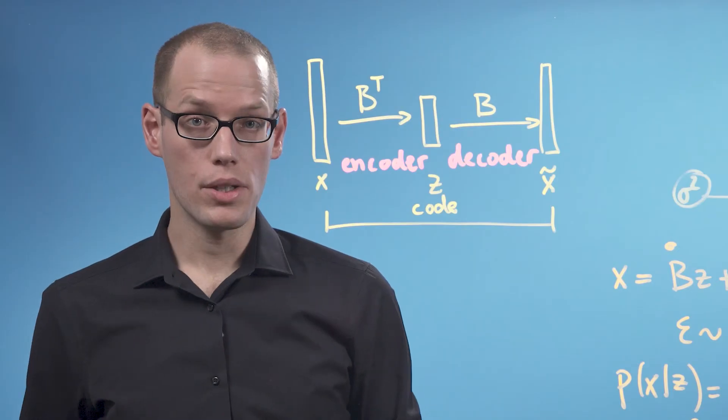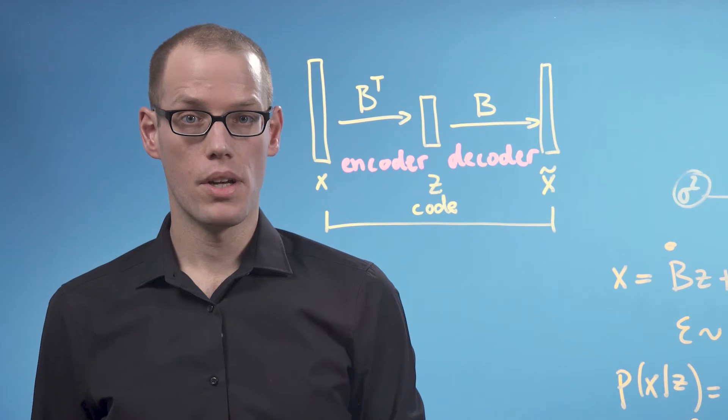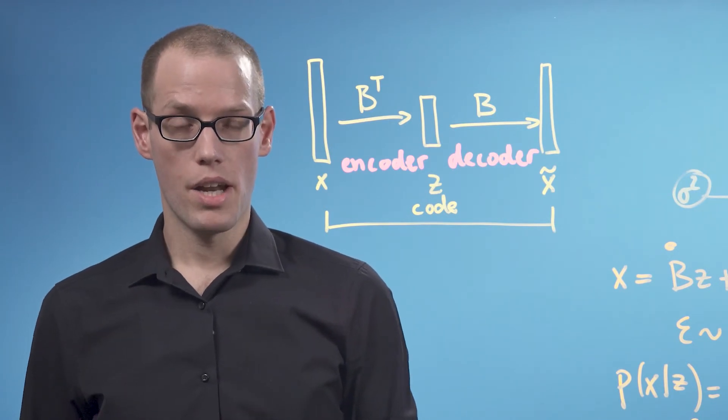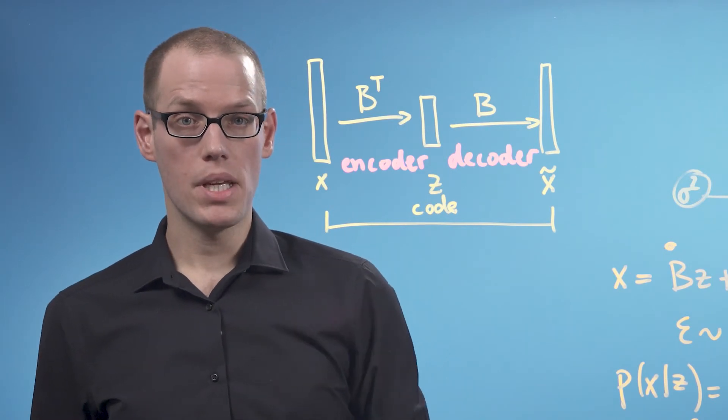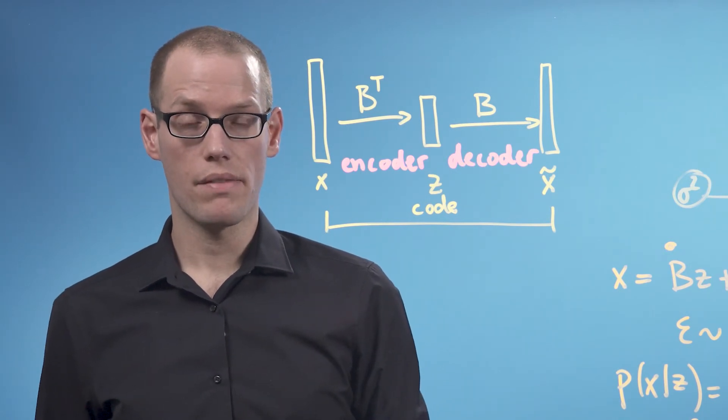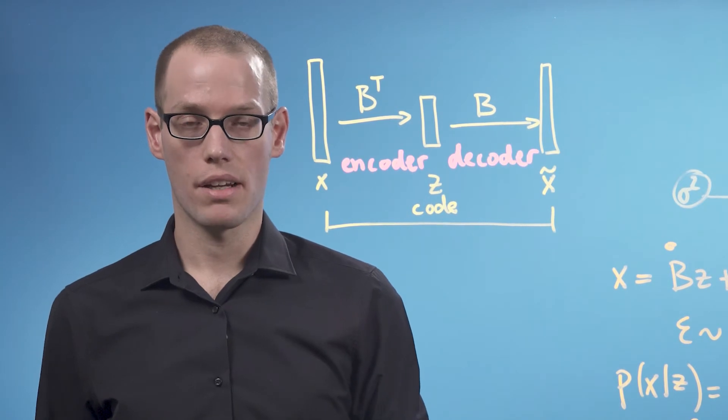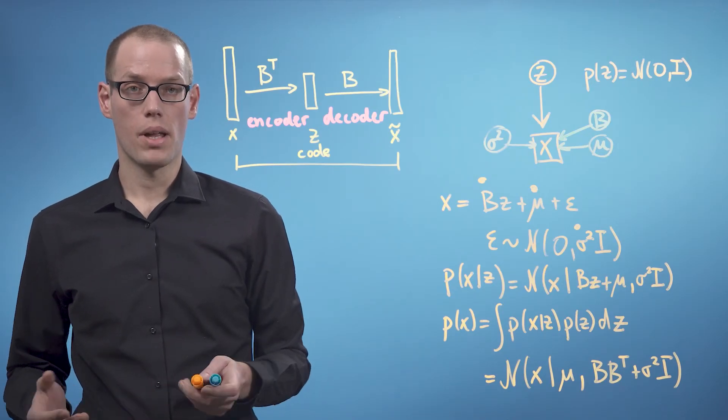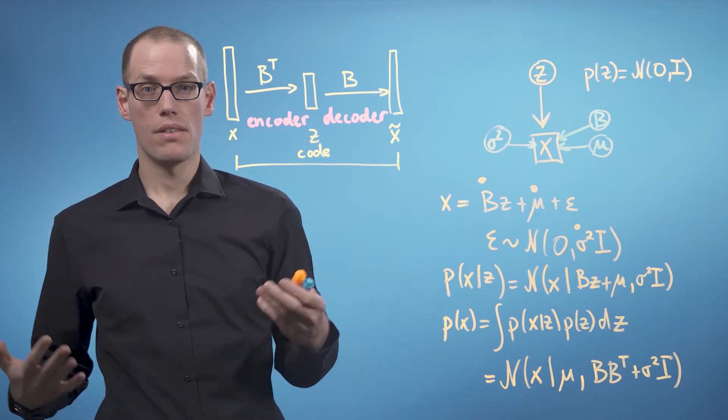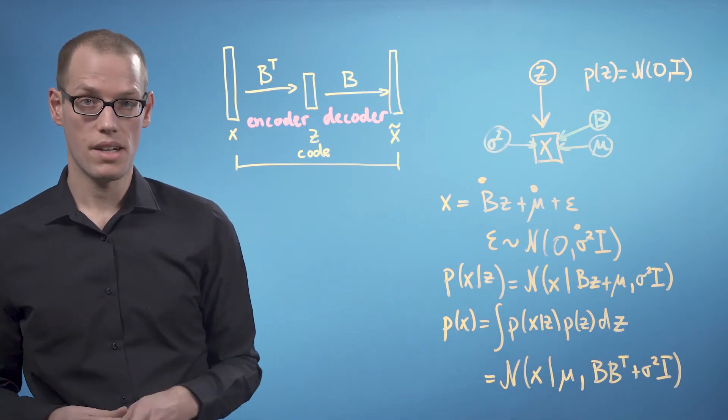We can now determine the parameters of this model using maximum likelihood estimation. And we will find that mu is the mean of the data and B is a matrix that contains the eigenvectors that correspond to the largest eigenvalues. To get the low dimensional code of a data point, we can apply Bayes' theorem to invert the linear relationship between Z and X.